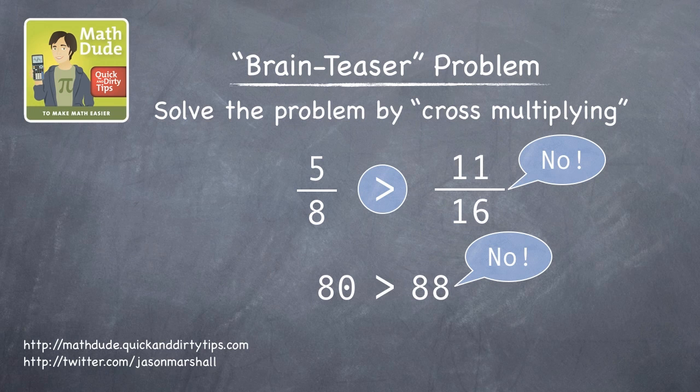In other words, if we turn those greater-than signs into less-than signs, we see that eighty is less than eighty-eight, and therefore, five-eighths is less than eleven-sixteenths.